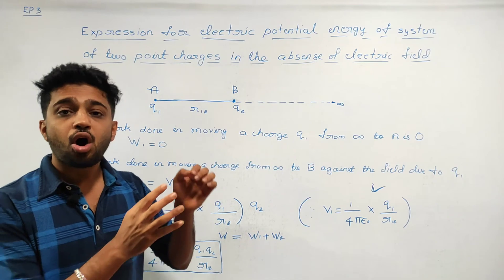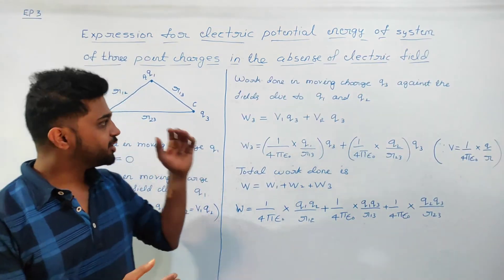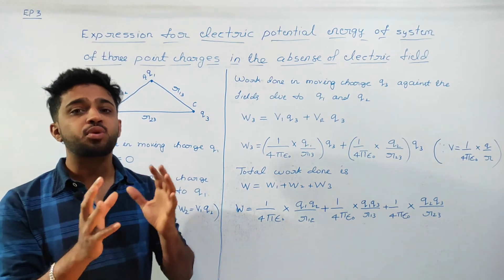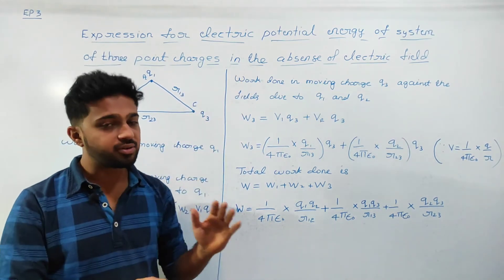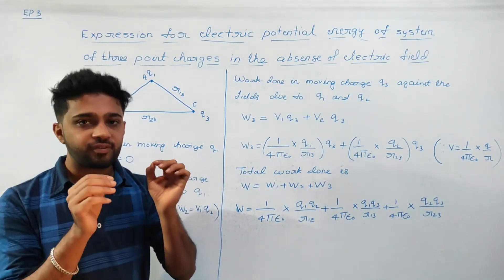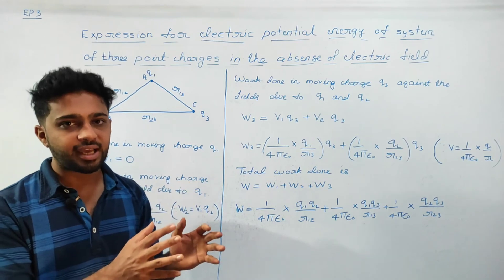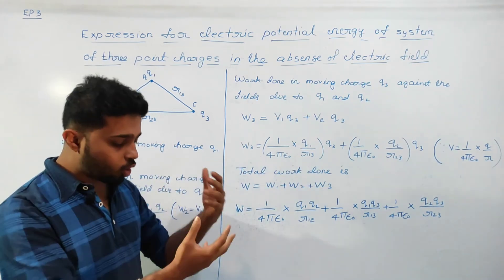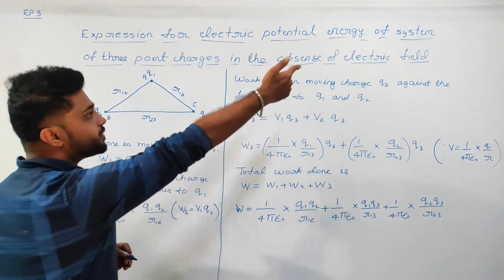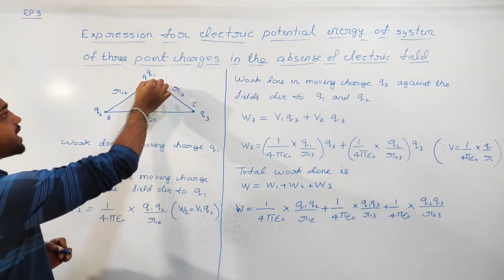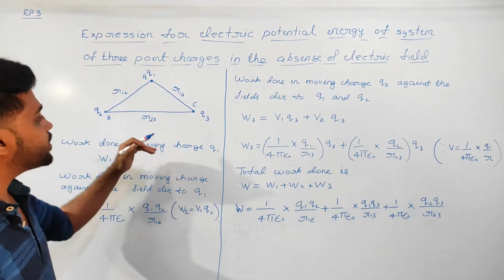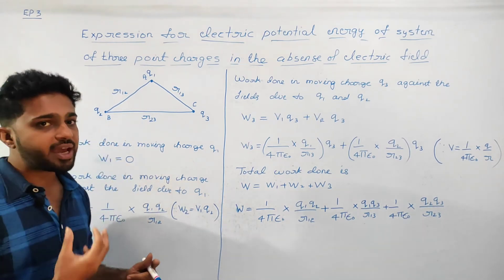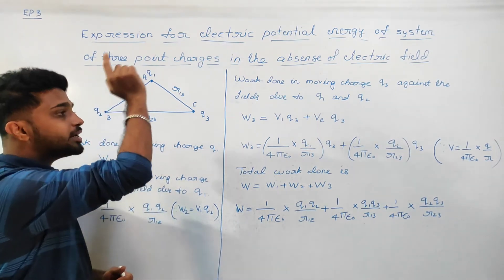Now, what is the system of 3 charges? We are considering the case in which the external electric field is zero. The first charge is brought in — since there is no external electric field, W1 is zero. So W1 is 0. Next, Q2 is brought from infinity to point B.